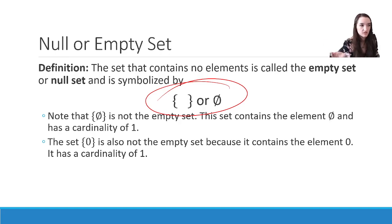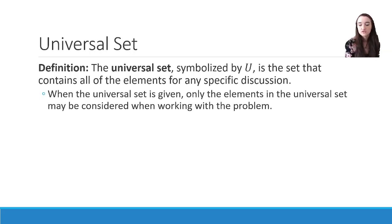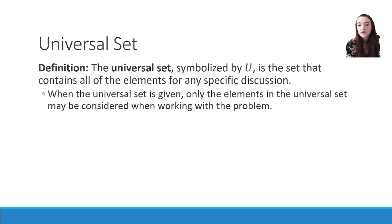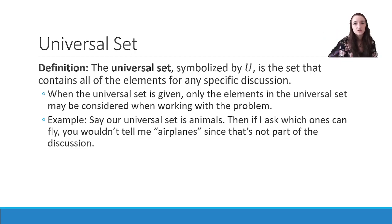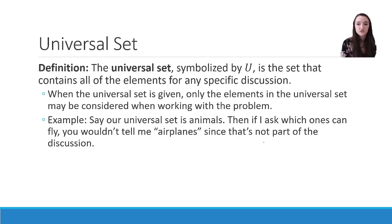The reverse of the empty set is the universal set, symbolized often by a capital U. The universal set is the set that contains all of the elements for any specific discussion. When the universal set is given, only the elements in the universal set may be considered when working with the problem. For example, if our universal set is animals, and I ask which elements of that set can fly, you wouldn't say airplanes — that's not part of the discussion. The universal set narrows our discussion to one particular universe of discourse. We're talking about animals, not airplanes.